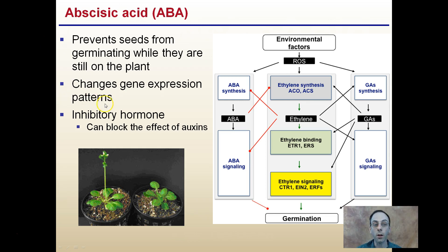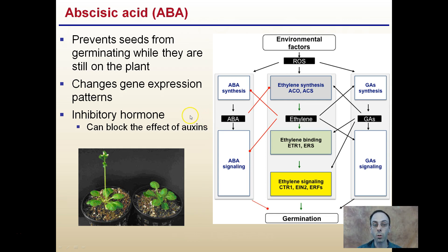Abscisic acid also changes gene expression patterns, and it's considered an inhibitory hormone because it can block the effects of auxins. So keep in mind we have a lot of these hormones that are interacting with one another. Abscisic acid is an inhibitory hormone that can suppress or block the effects of auxins in the plant.